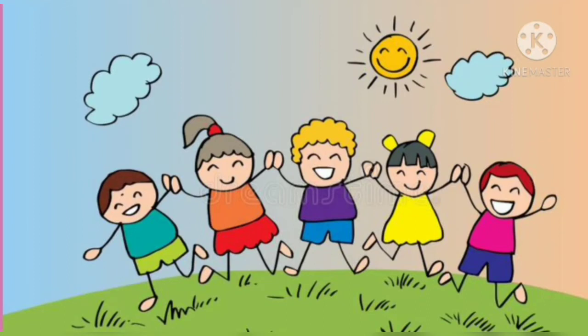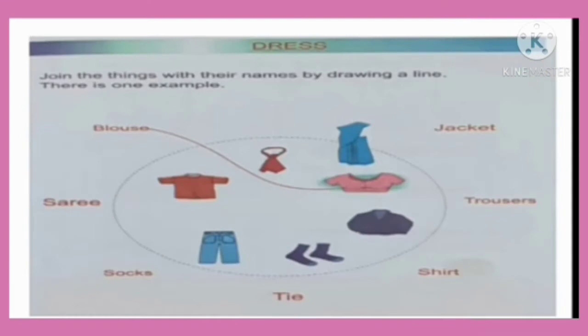Hi children. In last class we learnt about lesson number 3: DRESS. Now let us see the activity in textbook page number 27: Join the things with their names by drawing a line. There is one example. You can see some pictures of DRESS inside the circle and their names outside the circle. You have to identify those items of dress and match their names.